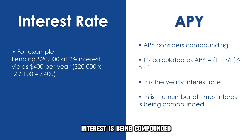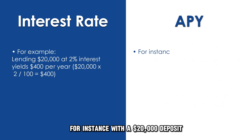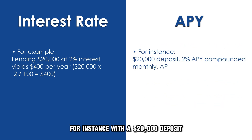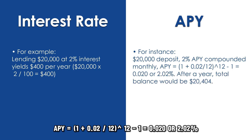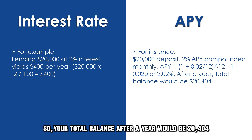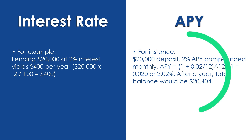For instance, with a $20,000 deposit and 2% APY compounded monthly: APY = (1 + 0.02/12)^12 − 1 = 0.0202, or 2.02%. So your total balance after a year would be $20,404. Therefore, APY terms provide a more accurate presentation of your potential earnings.